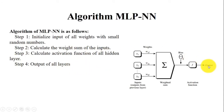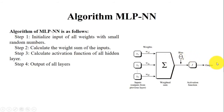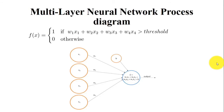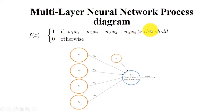We have some kind of inputs and some kind of weights; we combine those weights and apply the activation function in order to get the output or the prediction. As shown in the process diagram, the function will return one only if the weighted sum of all the inputs is greater than the threshold.